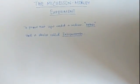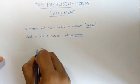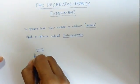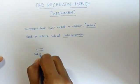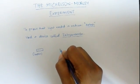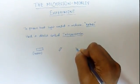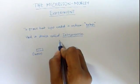This device basically consisted of a light source, preferably a laser source. And the setup also consisted of a partially silvered mirror and two vertical and horizontal mirrors.